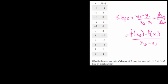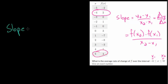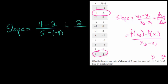We're going to look at these endpoints. When x is negative 4, we'll call that x1, and x2 is when x is 5. At negative 4, the y value is 2, and at 5 the y value is 4. So using the slope formula: for y2 we put 4, subtract y1 which is 2, and in the bottom we have 5 for x2 minus x1 which is negative 4 — so we're subtracting a negative, which becomes 2 over 5 plus 4, which is 9.